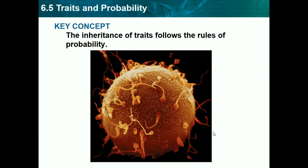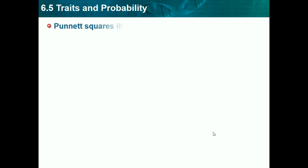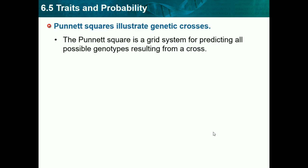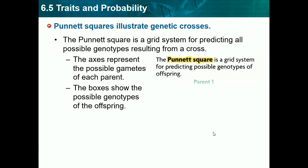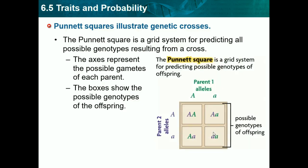Now we're going to be doing 6.5, which is traits and probability. The inheritance of traits follows the rules of probability — we're going to be using some simple math to figure out probability here. The Punnett square illustrates genetic crosses. The Punnett square is a grid system for predicting all possible genotypes resulting from a cross. The axes represent the possible gametes of each parent, and the boxes show the possible genotypes of the offspring. Up here we have the parent 1 alleles, and here we have the parent 2 alleles — you can switch these, it doesn't really matter.